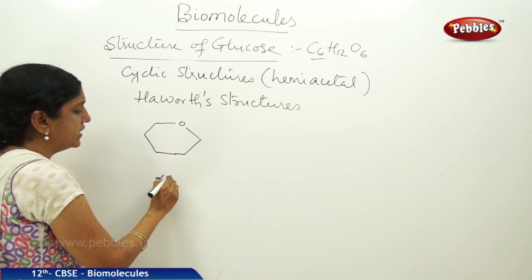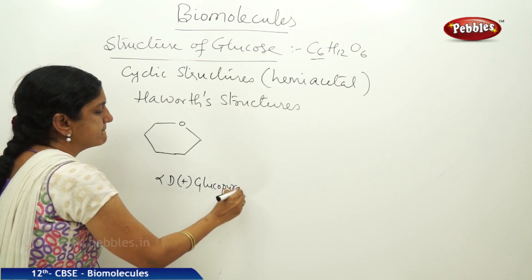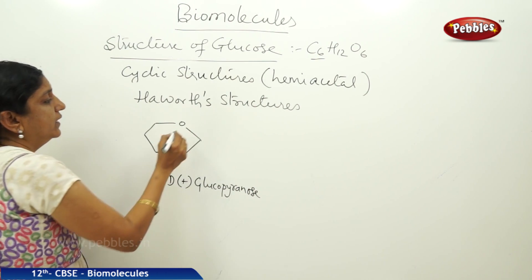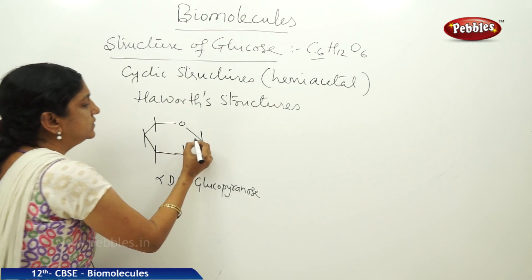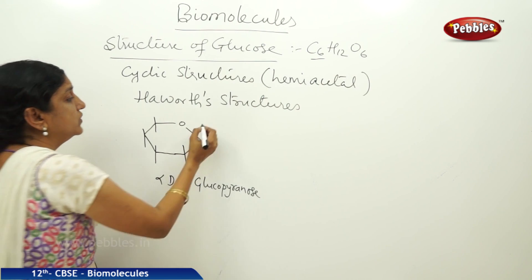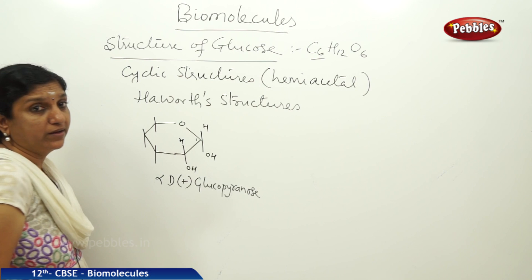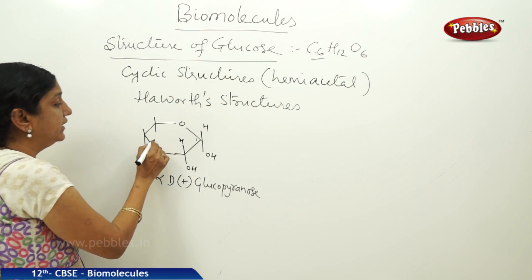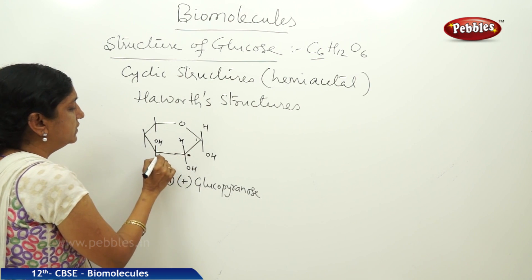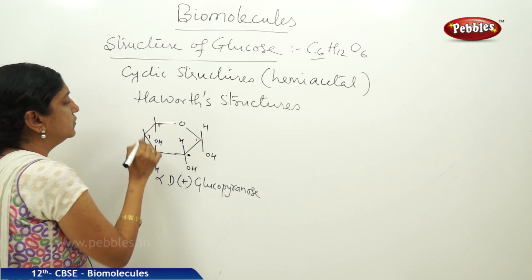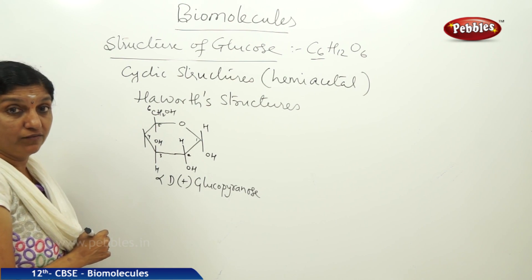So let us suppose this is alpha D plus glucopyranose, and HOH is present here. This is the first carbon, and the first carbon has H and OH. The second carbon also has HOH in this manner. The third carbon — we have to be careful while writing; you have to reverse them, so OH and H. This is the second carbon, this is third, this is the fourth, and this is the fifth. The sixth one is in the form of a primary alcoholic group, which is the sixth carbon of glucose.